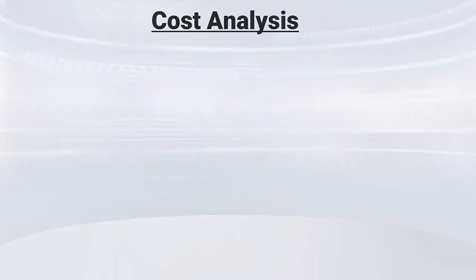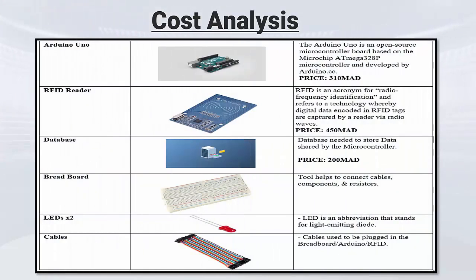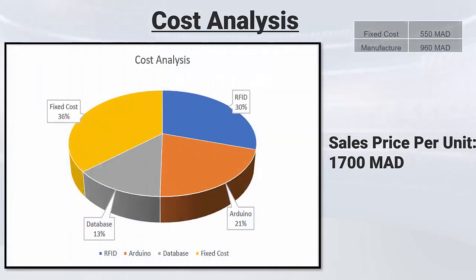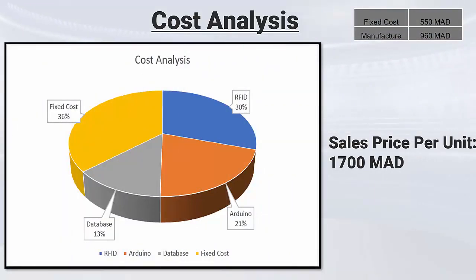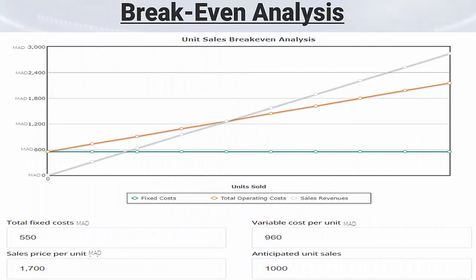Speaking of components, we will tackle their costs through the cost analysis. We have chosen specific components available in the Moroccan markets with good prices. The team has chosen Arduino Uno as a microcontroller, an RFID reader as a tag reader, a database where the data will be stored and saved, and additional components such as a breadboard and cables. In addition to manufacturing fees of 960 dirhams, there is also a fixed cost of 500 dirhams, which makes the price per unit 700 dirhams. This is a reasonable price compared to other products that perform the same or similar tasks in the market. Through the break-even analysis, we can see the minimum sales level represented by the break-even point, sufficient to cover all fixed and variable costs.